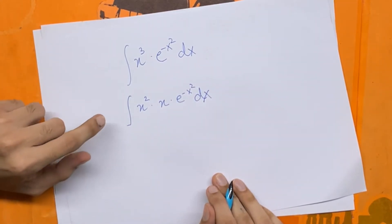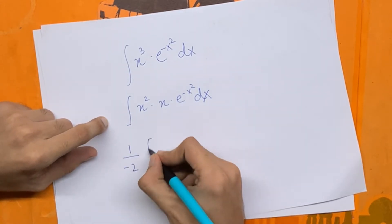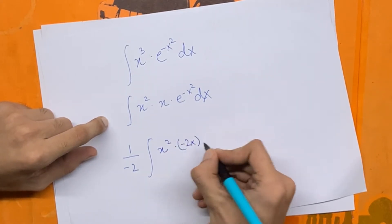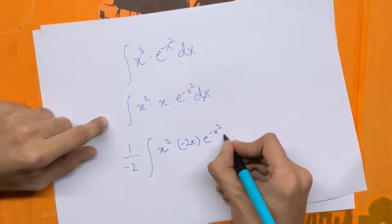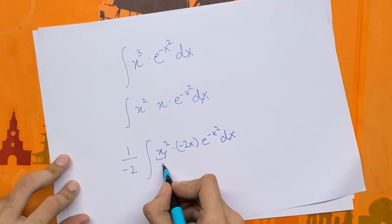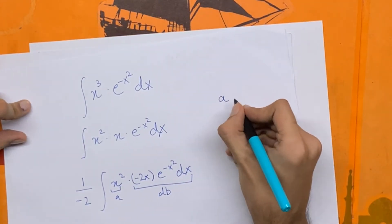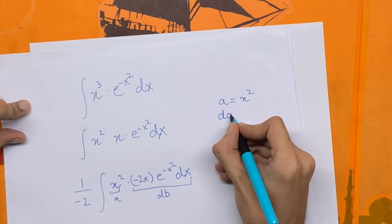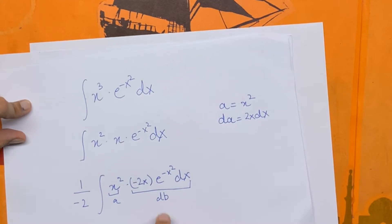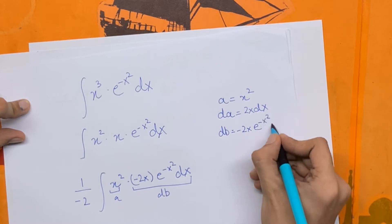Now I'm going to multiply and divide by minus 2 so that we get minus half times x squared times minus 2x times e to the power minus x squared dx. So now let's use integration by parts to solve this. Let's call this part a and let's call this part db. So a is equal to x squared, and that gives us da is equal to 2x dx. Now db is equal to minus 2x times e to the power minus x squared dx.